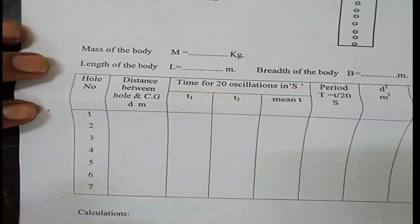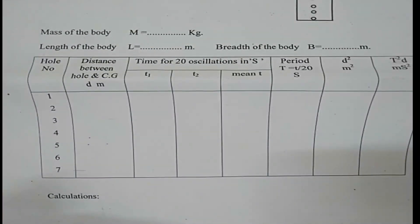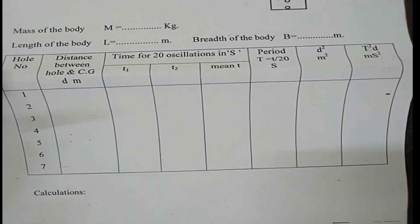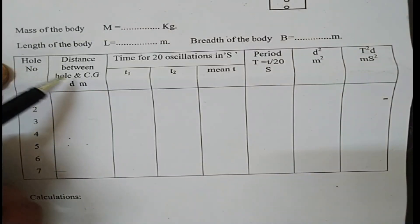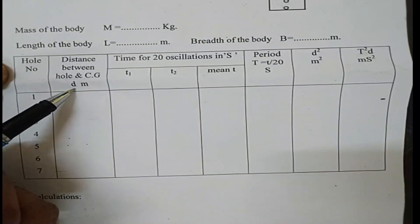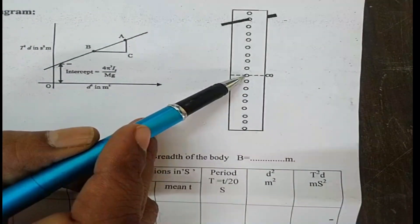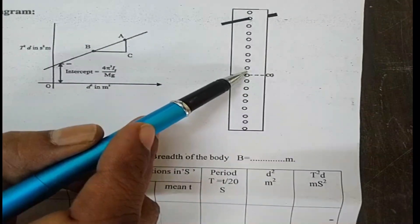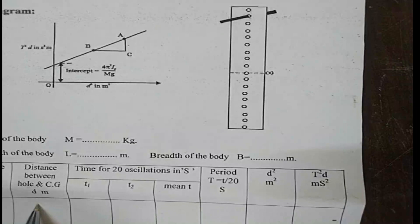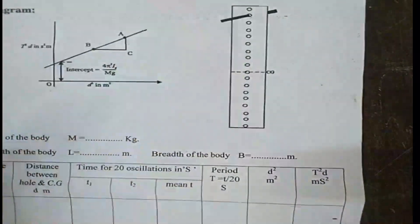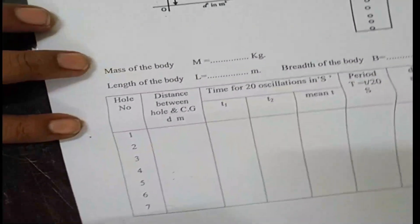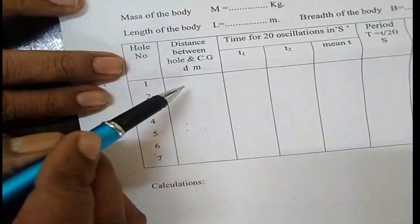The second part of the experiment involves the tabular column. Here we record hole numbers — either 7 or 9 holes. Find out the distance D of each hole from the center of gravity. From the CG to the first hole, measure and enter that distance; for the second hole, measure from the CG again; similarly for the third hole and so on. Enter the distances of all holes from the center of gravity in the table.